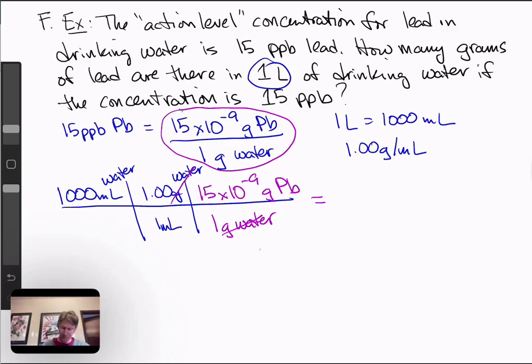And then we can multiply this out. My milliliters of water cancels, and I'm left with units of grams of lead. And I have to multiply the numbers across the top.